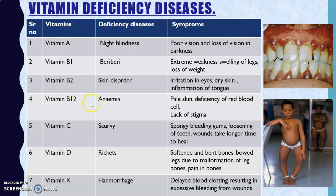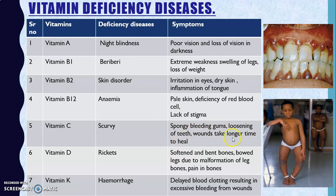Vitamin B12 deficiency causes anemia, with symptoms including pale skin, deficiency of red blood cells, and general weakness. Vitamin C is rich in citrus fruits like lemons and oranges; its deficiency causes scurvy. Symptoms of scurvy include spongy and bleeding gums, loosening of teeth, wounds taking a longer time to heal, and gum bleeding.